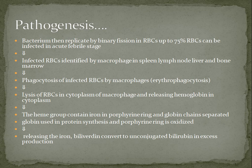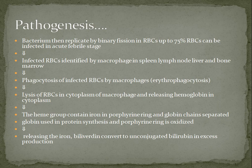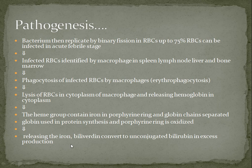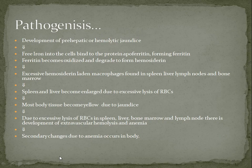The bacterium in the cattle then replicates by binary fission in the RBCs. Up to 75% of RBCs can be infected in an acute febrile state. When the infected RBCs are identified by macrophages in the spleen, lymph node, liver, and bone marrow, phagocytosis of infected RBCs by macrophages — erythrophagocytosis — occurs. The lysis of RBCs in the cytoplasm of macrophages releases hemoglobin into the cytoplasm.